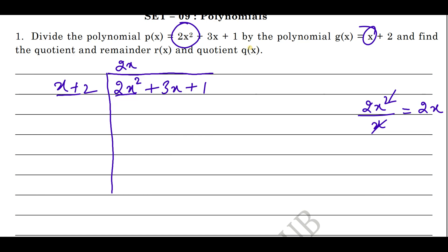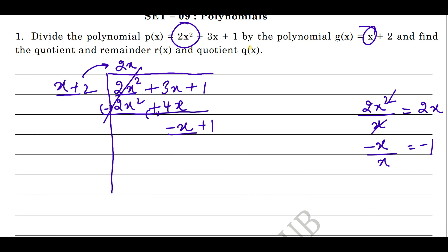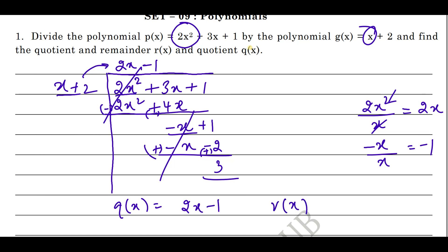Multiply G(x) by 2x: 2x into x is 2x², and 2x into 2 is 4x. Change the sign in the subtraction — plus becomes minus. The first term will cancel. What you get is 3x minus 4x = minus x, plus 1. Divide again: the first term of this divided by the first term of G(x) gives minus 1. Multiply by minus 1: you get minus x and minus 2. Change the sign — what you get is 3. So Q(x) = 2x − 1 and R(x) = 3.